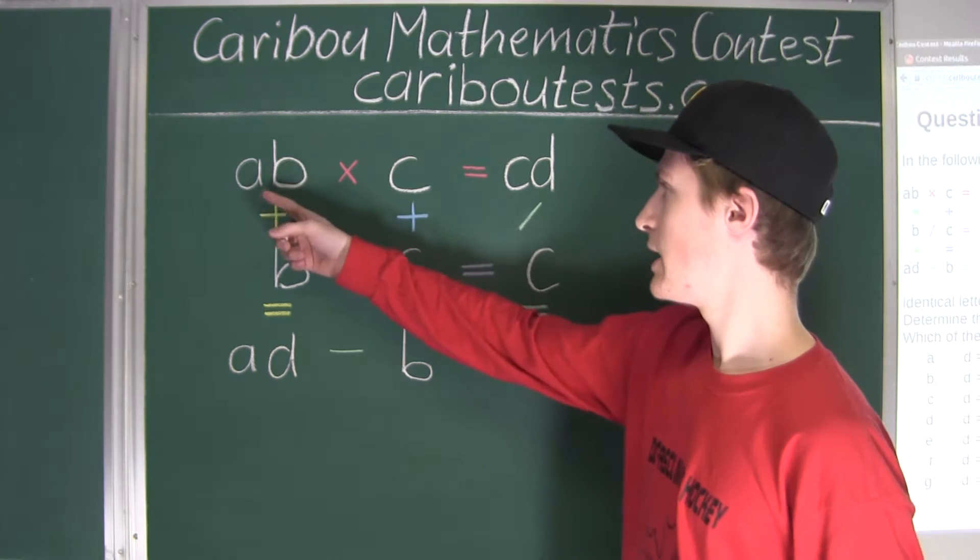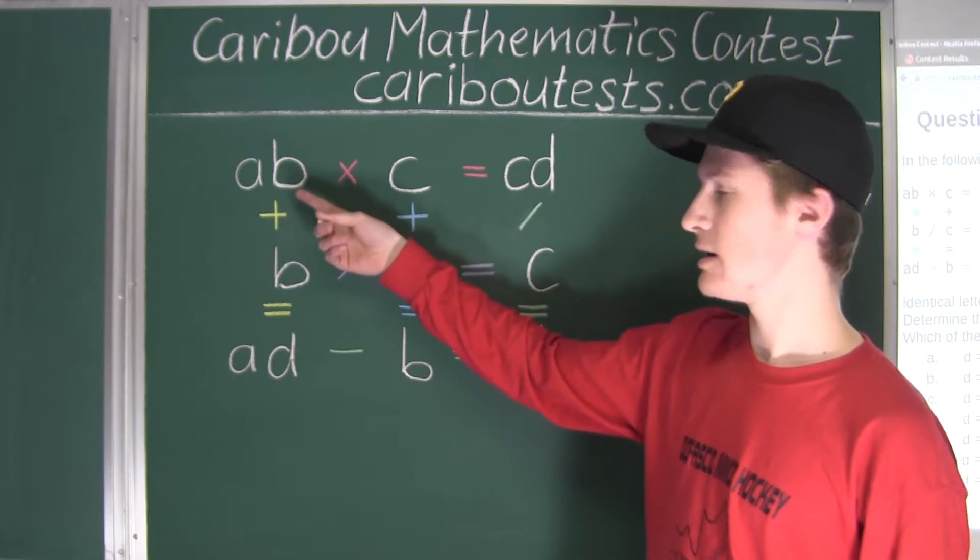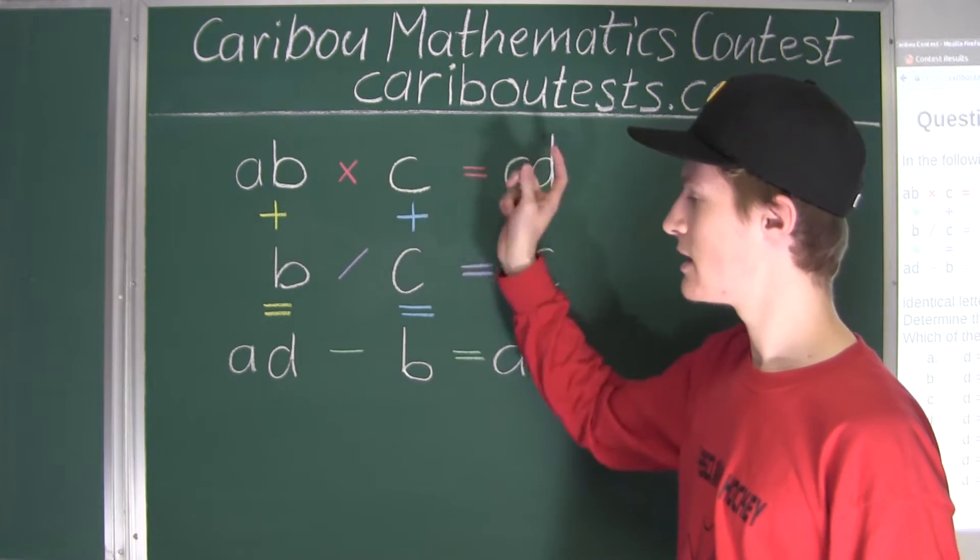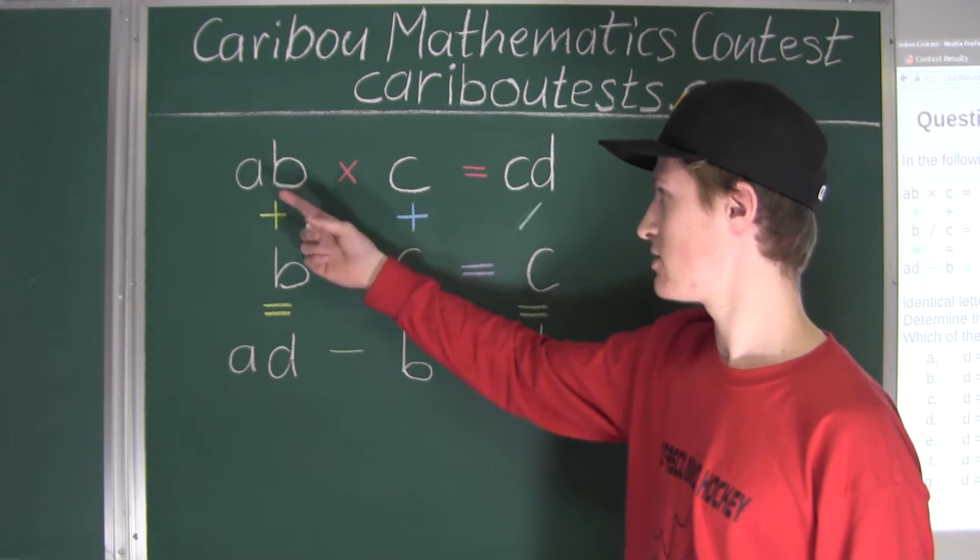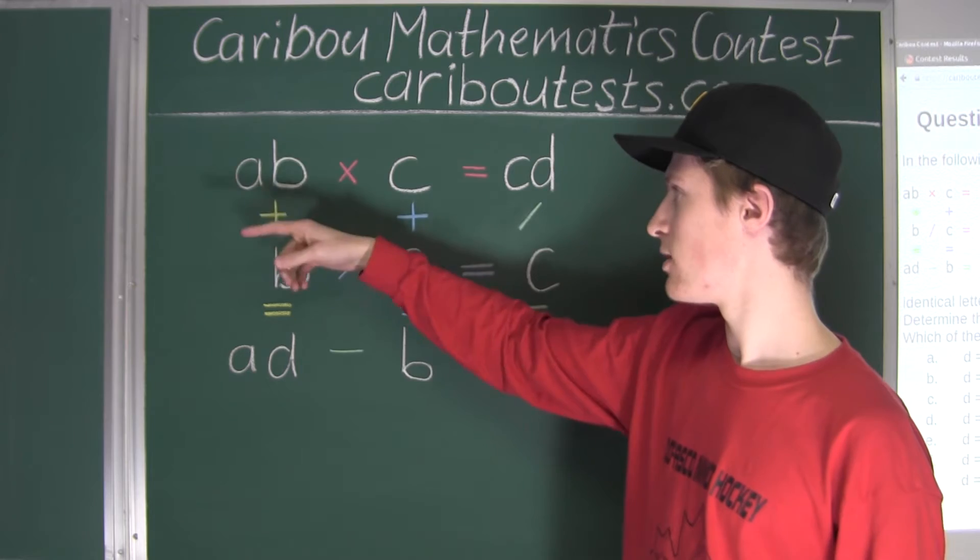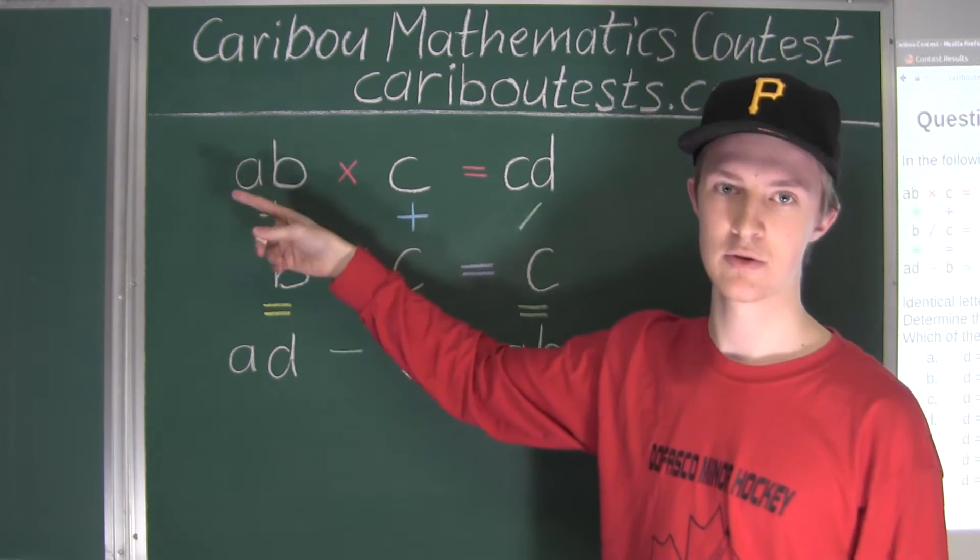So each letter stands for a different digit. So for example, A could be 1, B could be 2, C could be 3, and so on. And when we have AB, so the letters beside each other, in our example we had A being 1, B being 2, that would make this number 12.